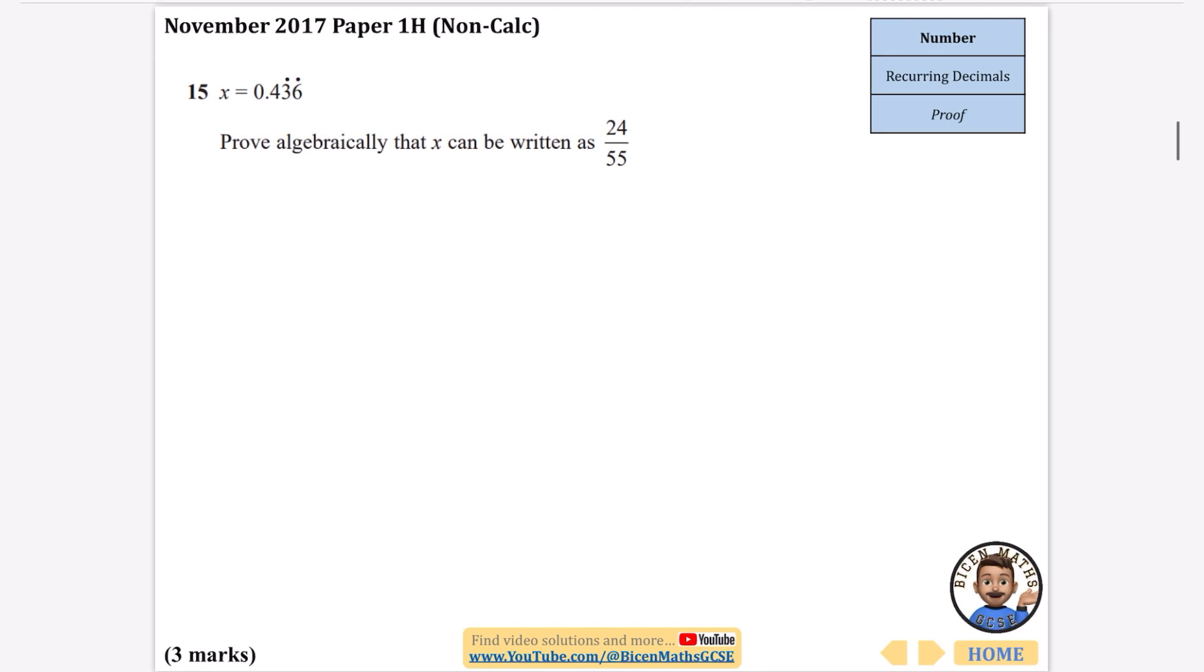Again, it's a non-calculator question and we want to prove algebraically that x can be written as 24 over 55. They've already told us that x is equal to 0.436 recurring. I'll write out a few more just to remind me what it looks like. I'm going to times it by 10, which gives me 4.36 recurring. Now I need to get it so I have the same decimals afterwards, so I'm going to times this one by 100, which means it's going to be 1000x. So 1000x is 436.36 recurring.